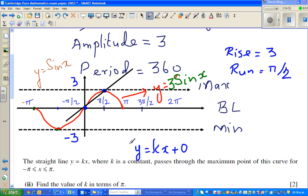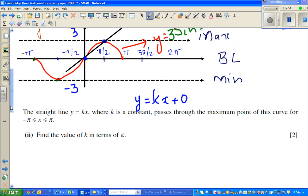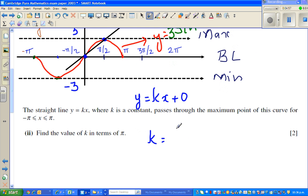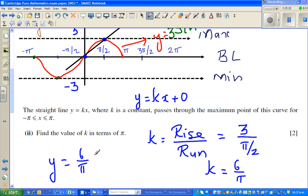So k is the gradient. I can say k is rise over run, and the rise is 3, and the run is pi by 2. When you're dividing by half, that means you're multiplying by 2. That is nothing but k equals 6 over pi. So we can write the equation like y equals 6 over pi times x.